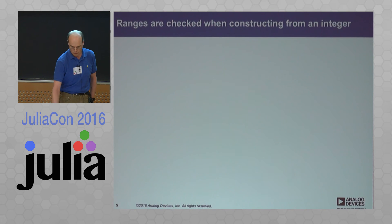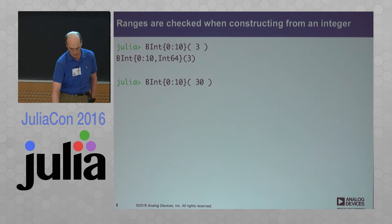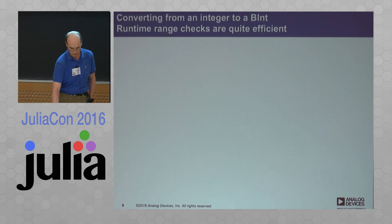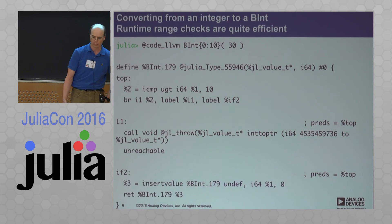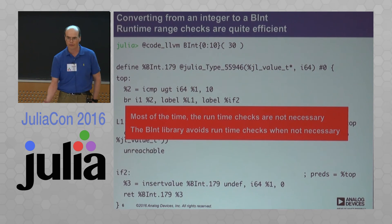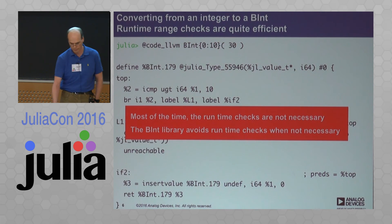The ranges are checked when you construct the number from an integer. You can build a number which is 0 to 10 with the value 3 — that's perfectly fine. You try to make the number 30 into a number between 0 and 10, you get an error. That's kind of what you'd expect. The code to do this is fairly efficient. I love this aspect where you can just look at the LLVM code. Most of the time you don't need to do these checks and it's nice not to have to, to get the efficiency.